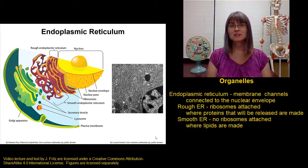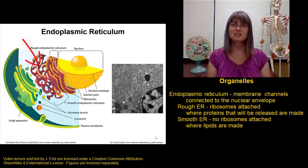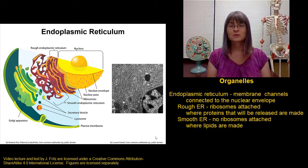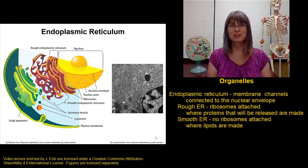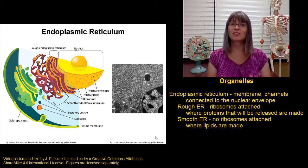The endoplasmic reticulum without ribosomes attached is called smooth endoplasmic reticulum, or smooth ER. Smooth ER is the site of lipid synthesis — this is where we make the lipids that a cell needs, including fatty acids, cholesterol, hormones, and even phospholipids needed to make more membrane. Since liver cells are responsible for making a lot of the lipids that we need in our bodies, we find a lot of smooth endoplasmic reticulum in liver cells.